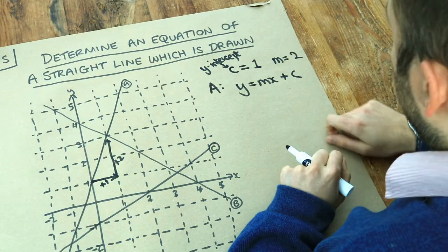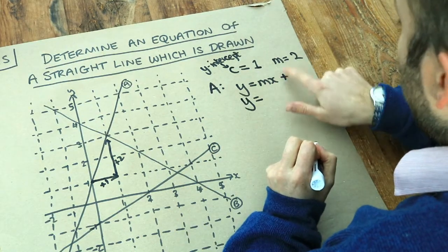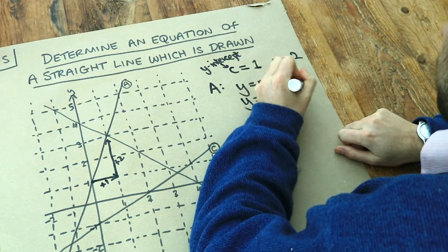So let's just substitute our M and our C in. We've got y is equal to mx, 2x, and then the C is 1, so we have 2x plus 1.